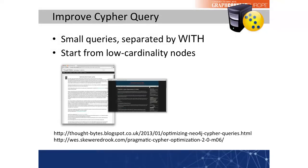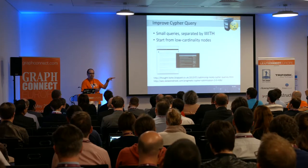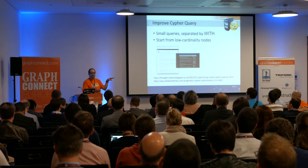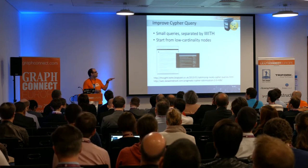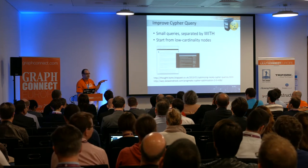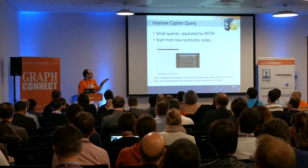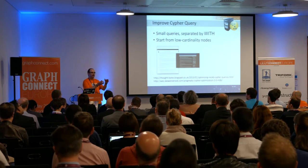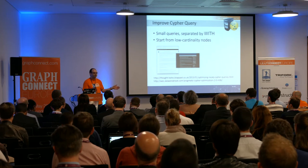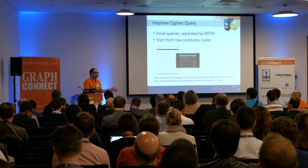I don't want to focus on Cypher optimization deeply — there is a lot of information out there. Just a few hints: try not to have one very complex query; split a Cypher query into smaller parts and try to terminate certain branches as early as possible. For that, there is the WITH statement. Also, a good advice is to always start from the cheap side — try to use low cardinality nodes as starting points. If you have a node that has 100 million outgoing relationships and you follow them, the query will be slow, even with the speed of Neo4j.